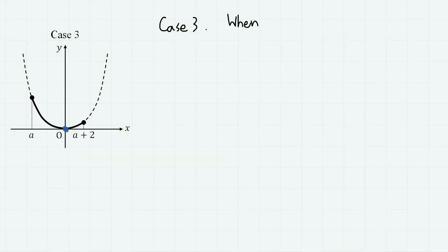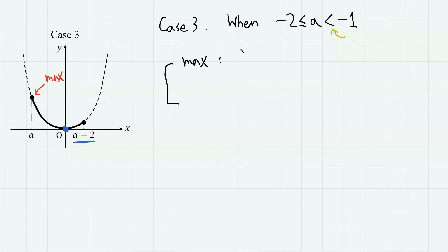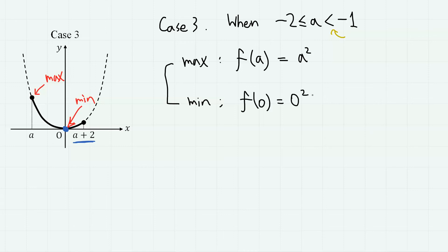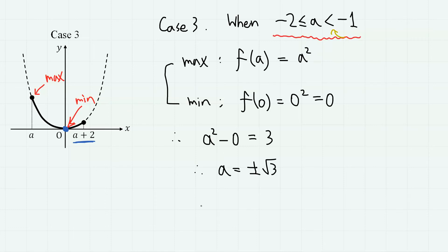For case 3, the vertex (0, 0) is in the domain but now closer to a + 2 than to a. This is the case where −2 ≤ a < −1. The maximum now occurs at x = a, so the maximum value is a², and the minimum is still at the vertex with value 0. Setting a² = 3, we get a = ±√3. Choosing the value that fits the range −2 ≤ a < −1, only a = −√3 is valid.